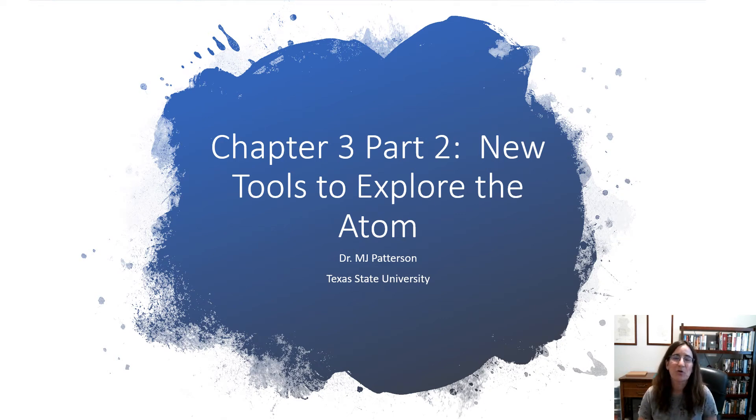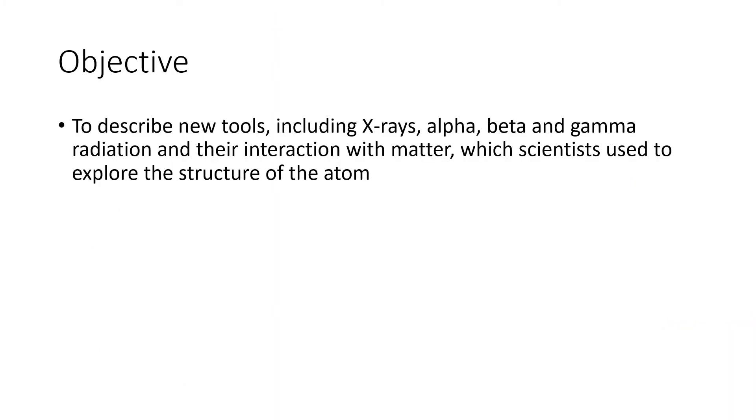Hi Bobcats! In this section we're going to explore some of these new tools that became available to scientists that helped to explore the structure of the atom. So our objective for this lecture is to describe these new tools that included things like x-rays, alpha, beta, and gamma radiation, and how these types of radiation interacted with matter. From that scientists were able to figure out the structure of matter as atoms.